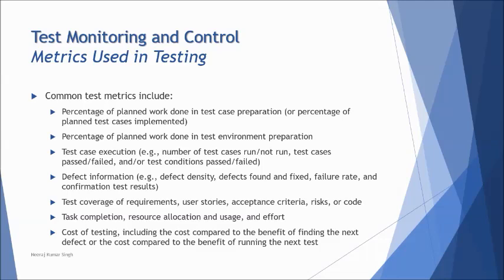There are also processes which can be measured with metrics, but we are not going into those details here. The examples given are just to illustrate what sample metrics could look like. For example: percentage of planned work done in test case preparation, percentage of planned work done in test environment preparation — generally measured as hours allocated versus hours utilized. Test case execution measures how many test cases have been executed versus the planned execution rate. Defect information, test coverage of requirements, user stories, acceptance criteria, risk or code, task completion, and cost of testing are among the many other test metrics used throughout the process.